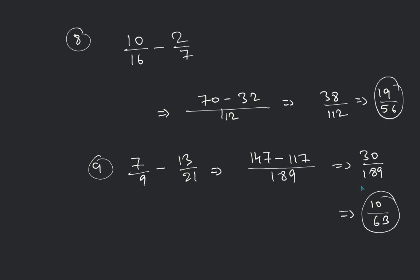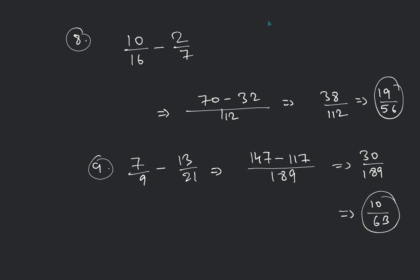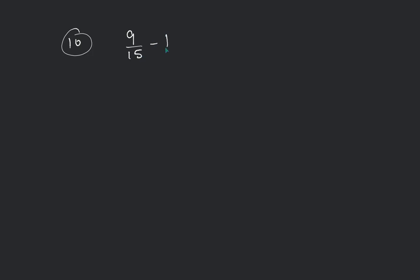Should I proceed to the next question? Number 10: 9 by 15 minus 1 by 2. We will do the same process — 15 into 2 = 30. That will be giving 18 minus 15 = 3 by 30, and it will be giving 1 by 10. 1 by 10 is your correct answer.